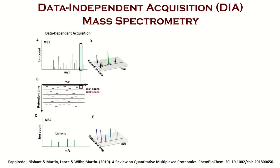Although this approach is powerful, due to the stochastic nature of data acquisition during mass spectrometry, the mass spectrometer samples peptides for fragmentation with a bias towards those with the strongest signal. Thus, DDA presents a challenge in reproducibly quantifying low-abundance peptides.